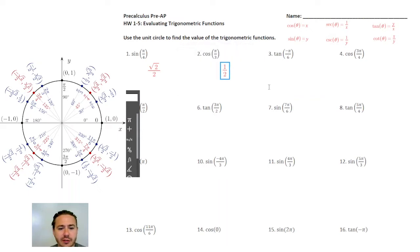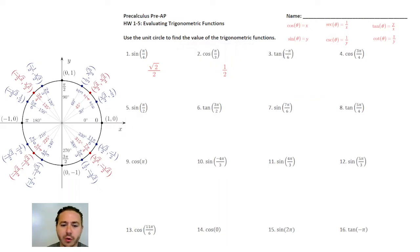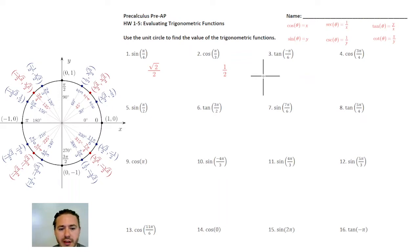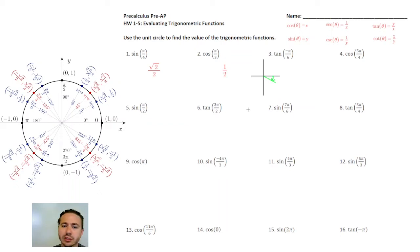Tangent is where we actually have to start doing a little bit of work. So tangent of negative π over 6: you'll see π over 6 at 30 degrees. Negative π over 6 will be 30 degrees in the clockwise direction. So just to give you an idea, on a coordinate plane, π over 6 is going to be roughly here, and negative π over 6 would be roughly here. So the coordinate is going to be the same as at 11π over 6 on the unit circle.